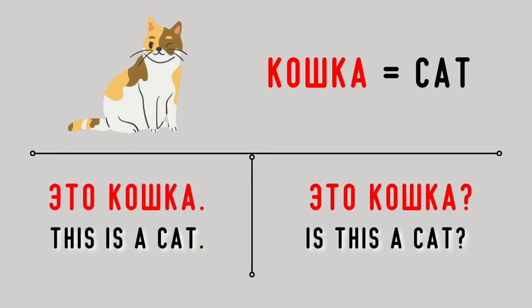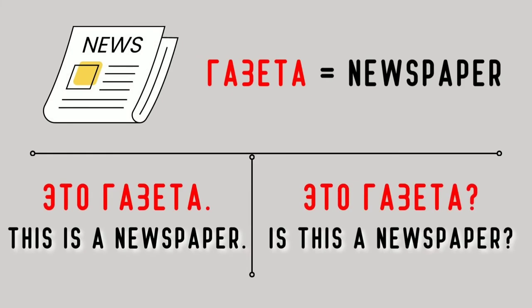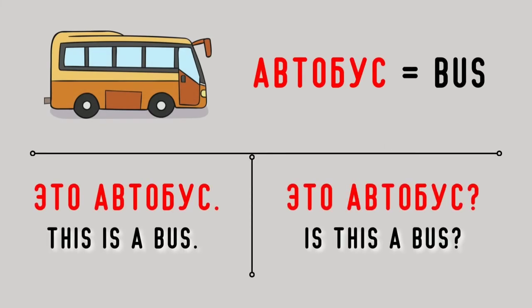Кошка — cat. Это кошка. This is a cat. Это кошка? Is this a cat? Собака — dog. Это собака. This is a dog. Это собака? Is this a dog? Газета — newspaper. Это газета. This is a newspaper. Это газета? Is this a newspaper? Автобус — bus. Это автобус. This is a bus. Это автобус? Is this a bus? Это автобус.